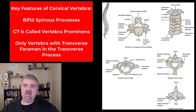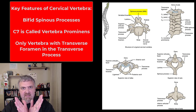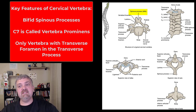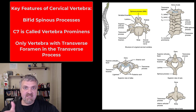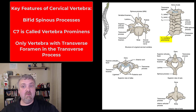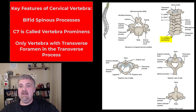The spinous processes of cervical vertebrae are usually bifid — split like a snake's tongue — because there are so many little muscles that attach there, giving more surface area for muscle attachment. With the rest of your vertebrae, you'll just see a single spinous process. The spinous processes of C3 to C6 are actually pretty short, making C7 look even bigger, so C7 is called vertebral prominence because of the size of that spinous process.